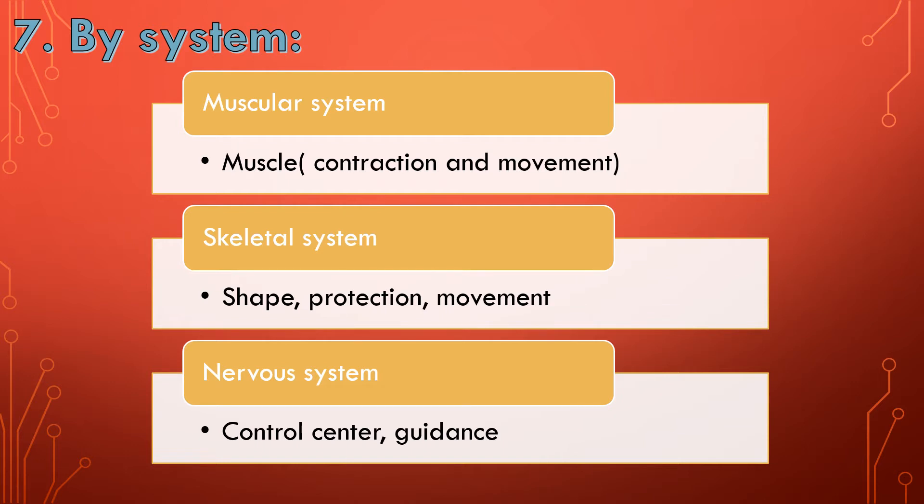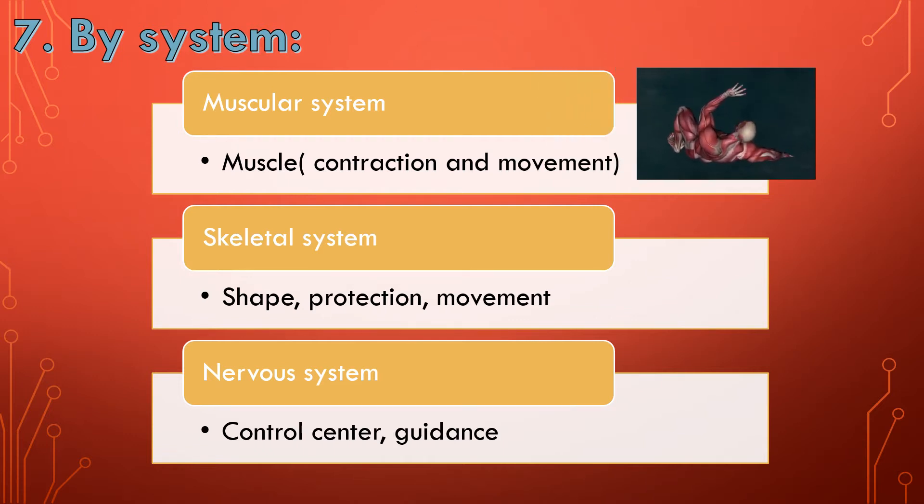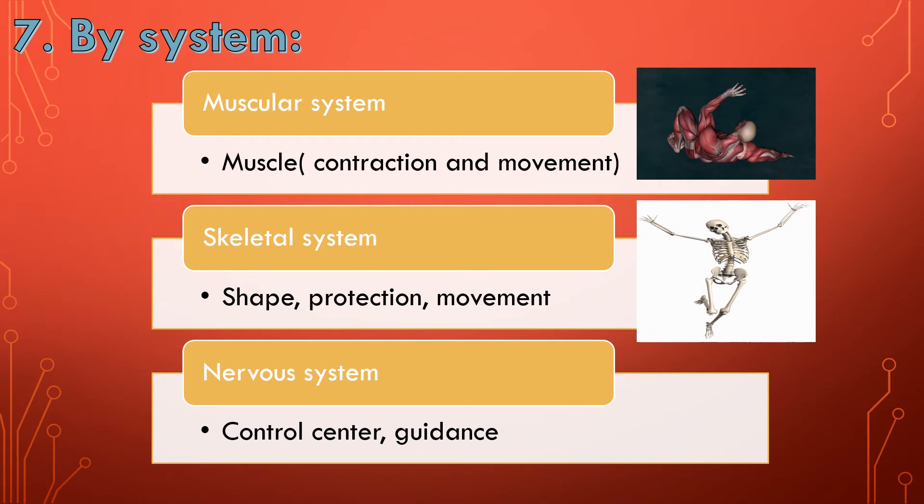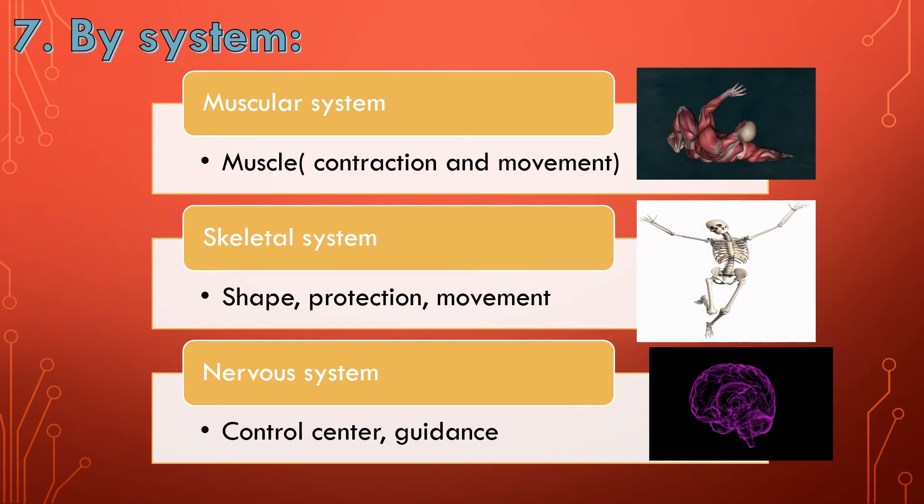Then the nervous system, which has the control center of the body - the brain - and guidance in so many activities. You can see the muscular system, skeletal system, then nervous system, which is made of the brain. Brain is part of the central nervous system and the spinal cord. Then there is the peripheral nervous system.